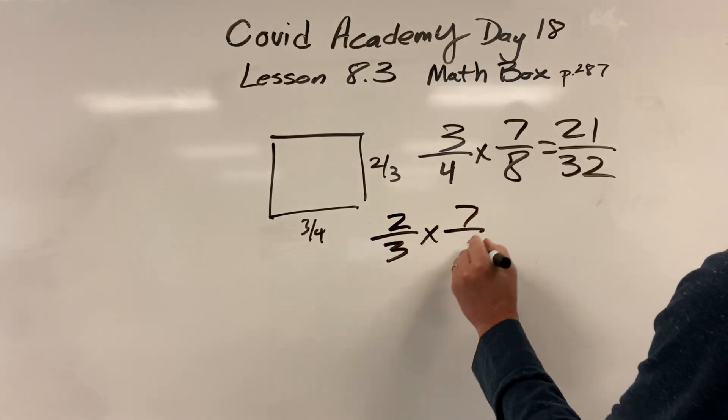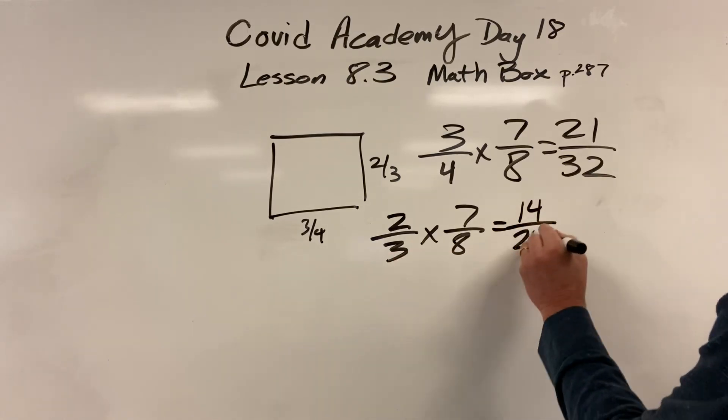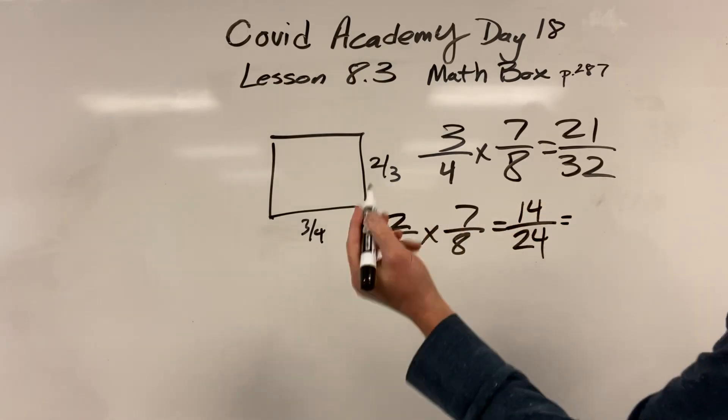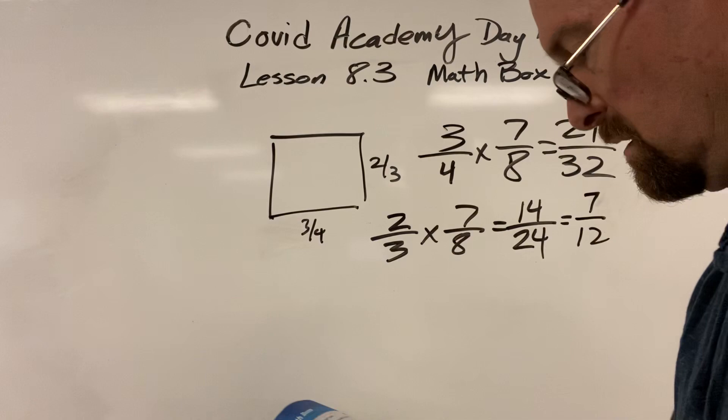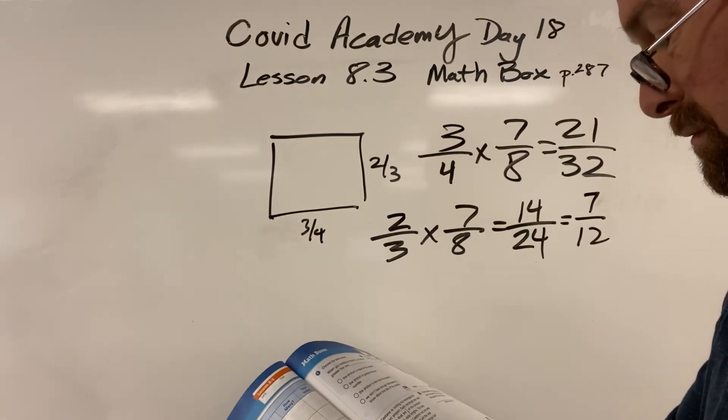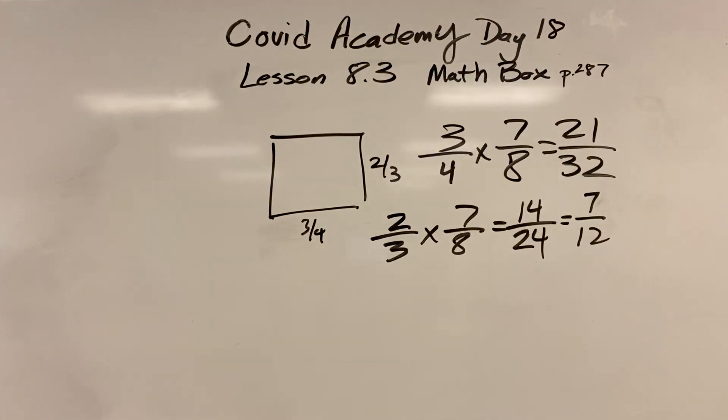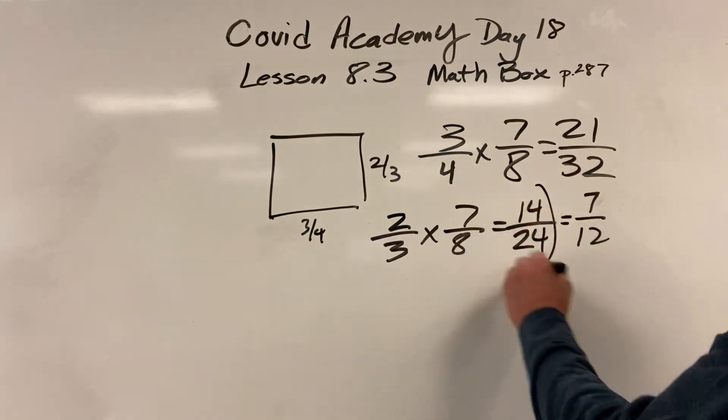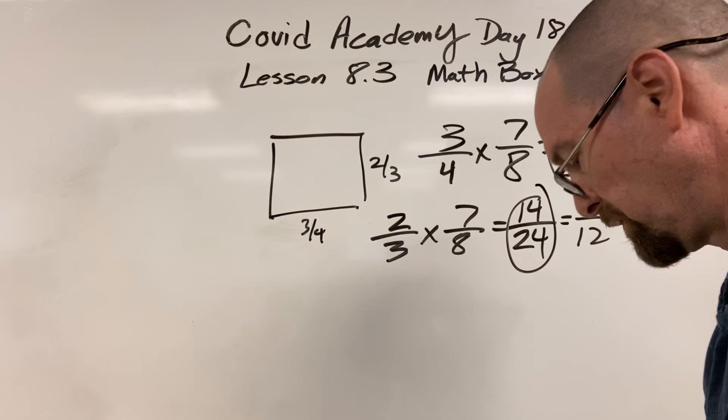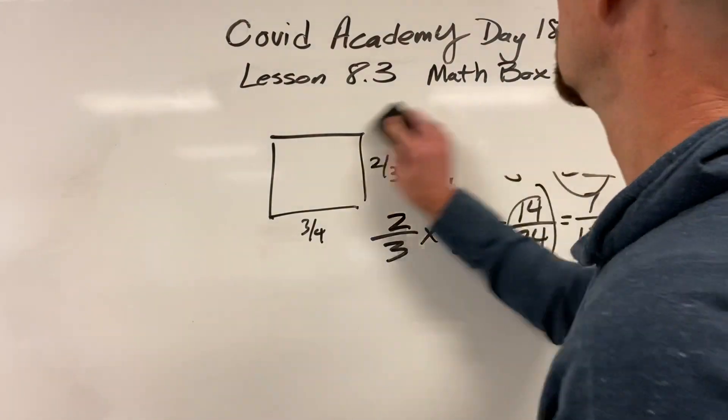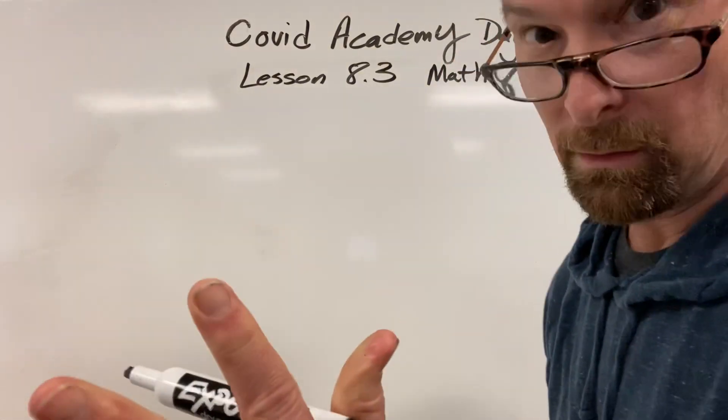Two-thirds times seven-eighths, and we get fourteen twenty-fourths. If you want to get all special, you could reduce this and make it seven-twelfths just to be cool, but I don't really care if you do that. So that's what they're going to be. I'm going to check the book because that is the most bizarre answer, and it is right. Someone thought that was a good idea over at University of Chicago. They have some issues.